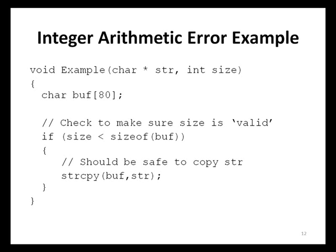The problem is that the code incorrectly assumes the size argument will never be a negative value. If size is passed in as negative 10, the if statement evaluates to true because negative 10 is less than sizeof(buff), which returns 80. Most compilers will cast the unsigned result of sizeof back to a signed integer for comparison. strcpy then copies data from str into buff, and if the length of str exceeds the capacity of buff, a buffer overflow condition occurs — demonstrating how a simple integer arithmetic error can lead to a buffer overflow.